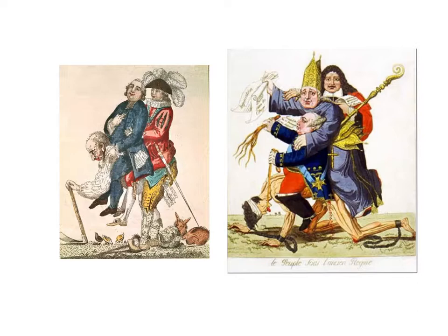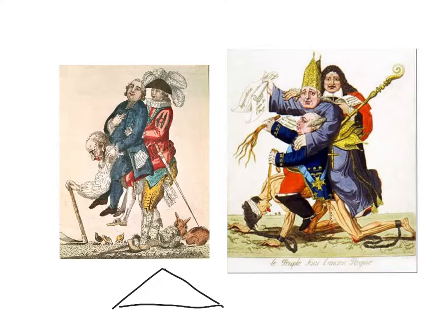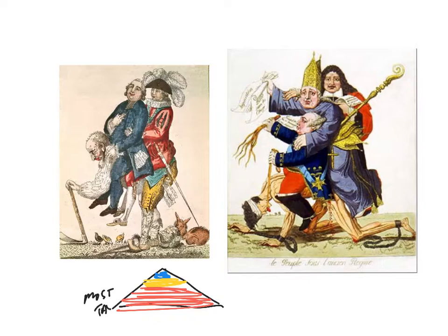These two images are political cartoons from the 18th century that depict the three estates and the inequalities among them. In our classes, we talked about the inequalities and all of you demonstrated an understanding of what was wrong with that old system, called the old regime. Most of our work showed that triangle image — at the very top, clergy, then nobility, and then the peasantry made up the majority of the structure. The peasant class paid the most taxes.